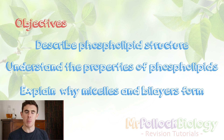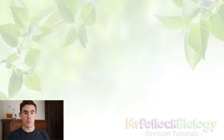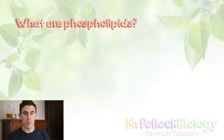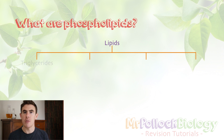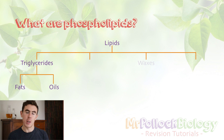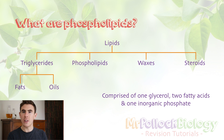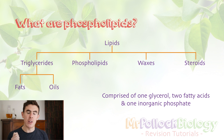The first thing we should probably do is explain what phospholipids are. As the name suggests, they're a type of lipid, which we know from previous videos are made up of carbon, hydrogen and oxygen but in different ratios to carbohydrates. Phospholipids are comprised of one molecule of glycerol, two fatty acids, and one inorganic phosphate group.